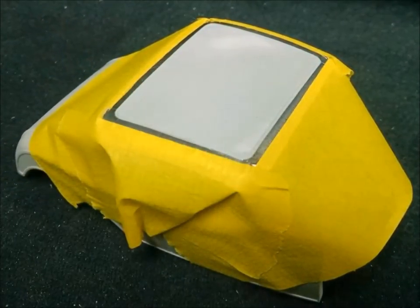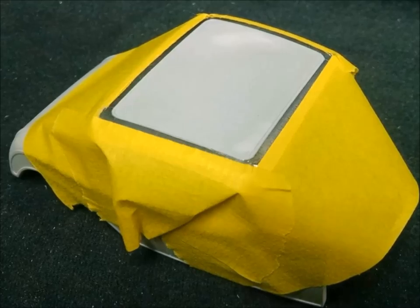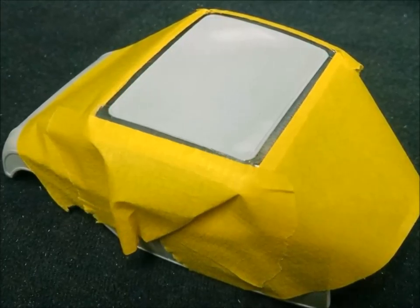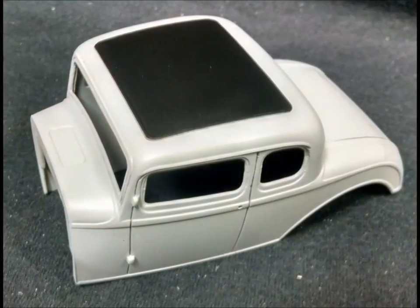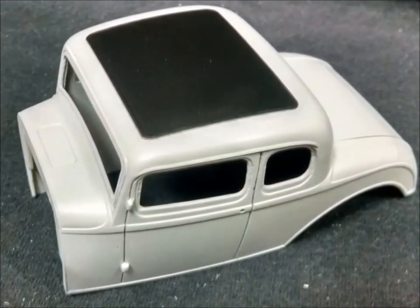After I was happy with the final bodywork, I masked off the fabric roof panel using bare metal foil for the precision edge and then regular masking tape to protect the rest from overspray. Then I shot it with Model Master Flat Black.